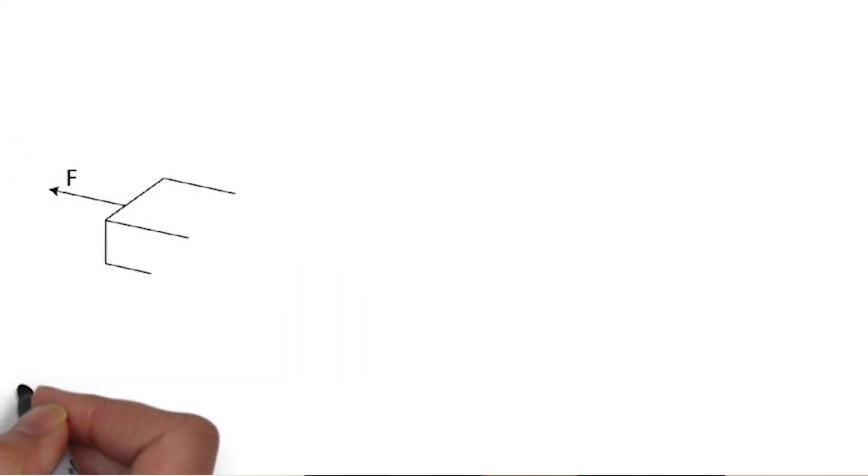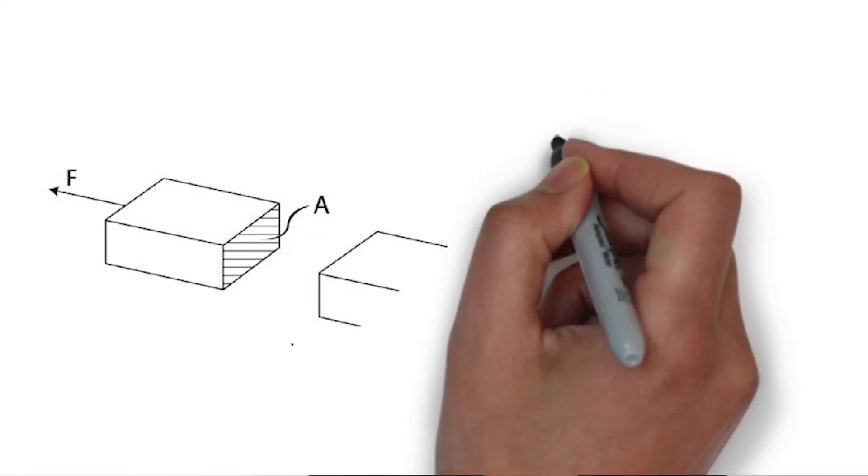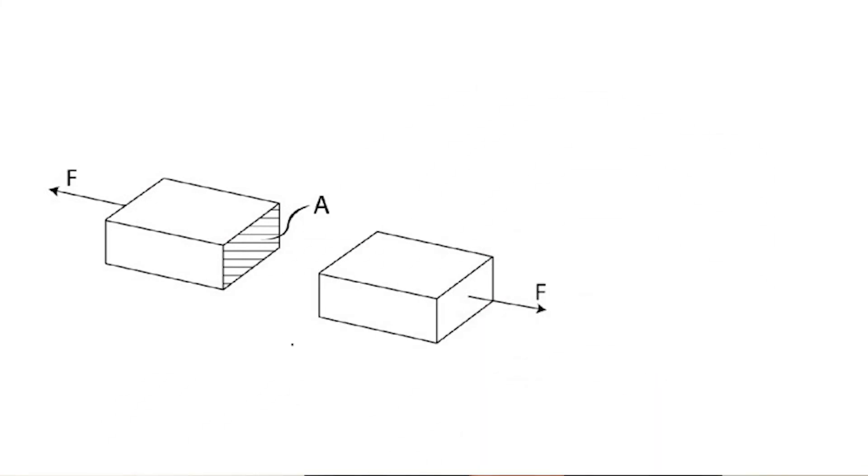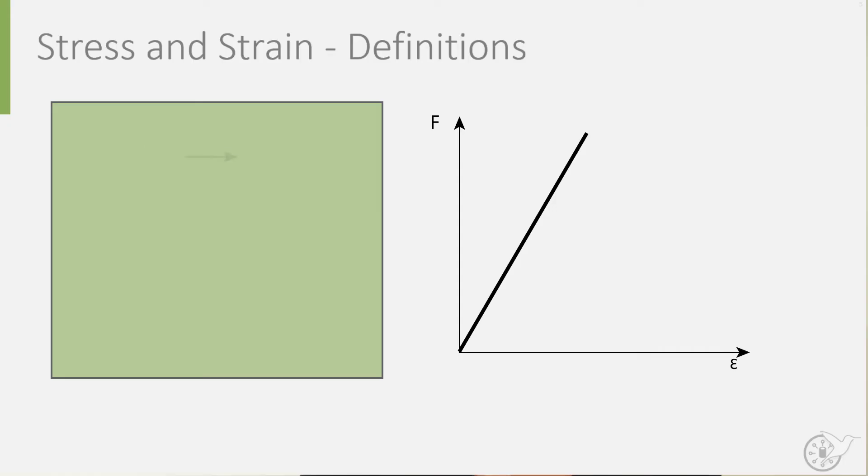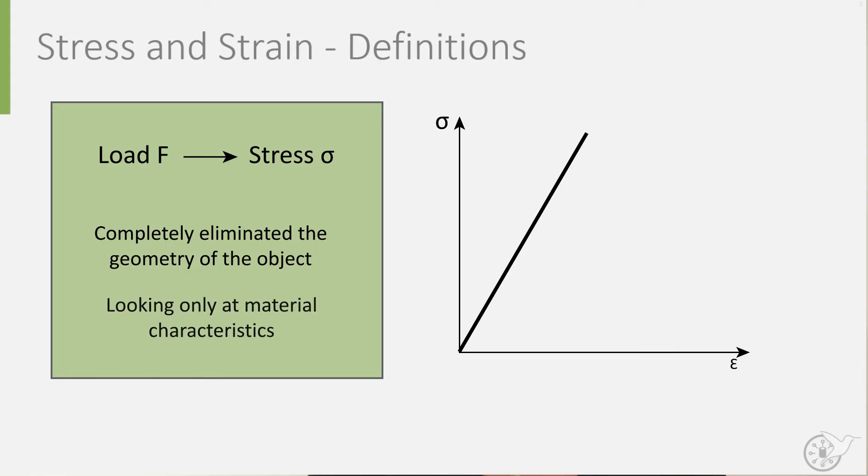Similarly, we can now define stress as the force F divided by the cross sectional area A on which it acts. Stress is denoted by the lower Greek letter sigma. In our load elongation diagram, we now replace the load with the stress sigma. By doing this, we have now completely eliminated the geometry of the object, and we are now solely looking at material characteristics.